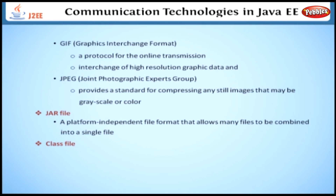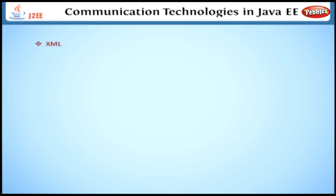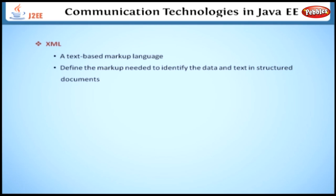The class file is a format of a compiled Java file as specified in the Java Virtual Machine specification. XML is a text-based markup language that allows you to define the markup needed to identify the data and text in structured documents. Here we have concluded our discussion on the overview of Java EE platform technologies. Let's get into discussing each technology in detail.